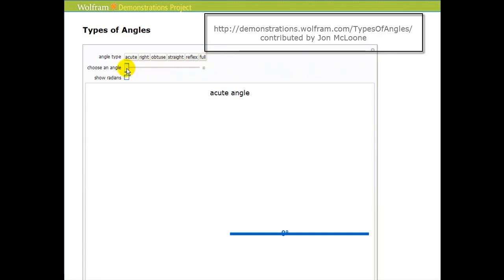As we start to rotate the terminal side of the angle, if the angle measures between zero and 90 degrees, it is classified as an acute angle. So all of these are acute angles.